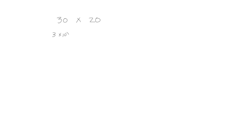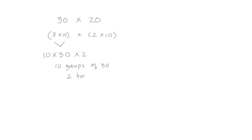Let's go back to 30 times 20 again and break it down into 3 times 10 times 2 times 10. But this time we're going to keep the 3 and the 10 together: 3 times 10 is 30. We're going to put the 10 here times 2, because in multiplication we can change the order. So we think of this as 10 groups of 30, done 2 times — that's 10 times 30.